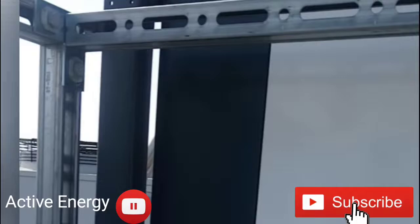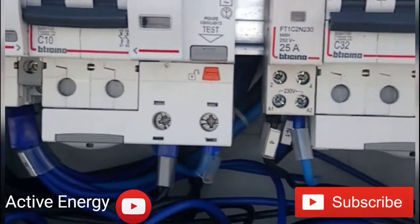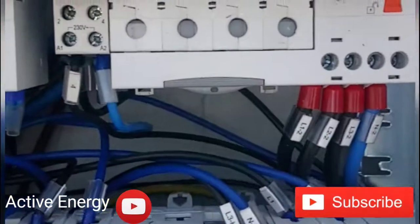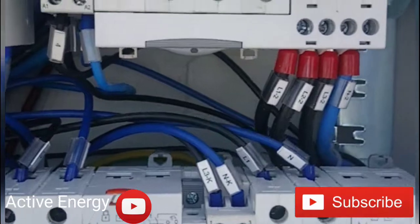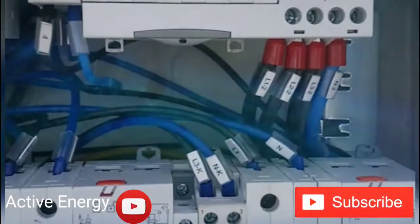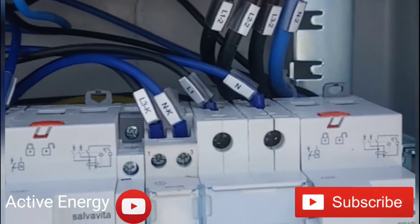The first switch is the caldaia, the heater - look at it. The second switch is the gruppo frigo, the refrigerator that gives you cold air in the ambience, in the rooms and offices.